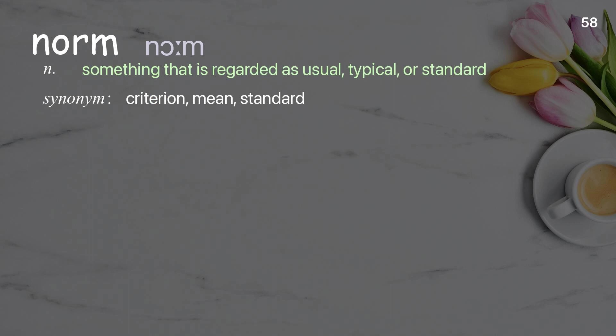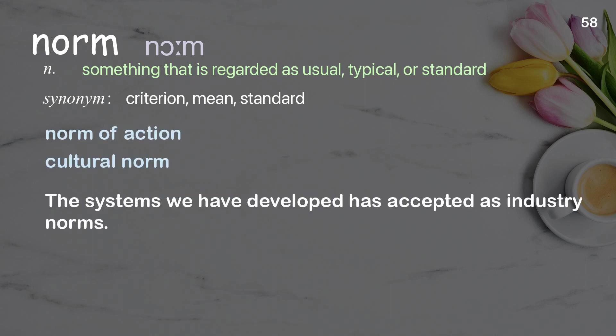Norm — something that is regarded as usual, typical, or standard. Examples: norm of action, cultural norm. The systems we have developed have been accepted as industry norms.